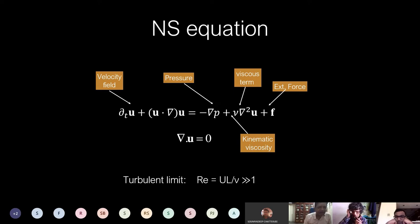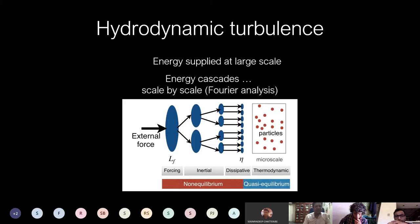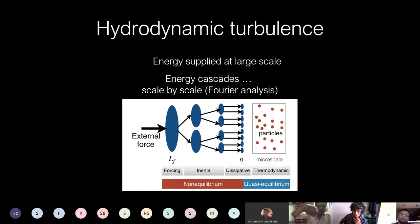There is a quantity called the Reynolds number, which is UL/ν — velocity times length scale divided by kinematic viscosity. Kolmogorov theory says we supply energy at large scale — think of stirring coffee with a spoon. This energy cascades to intermediate scales and then finally to very small (micro) scales where it gets dissipated. This is the scale-by-scale energy transfer.